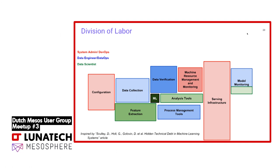If we look at the division of labor, it already looks more favorable. The data scientist — shown in green — still handles feature extraction, analyst tools, and model monitoring, but all of that is really concerned with data or model engineering, which is what the data scientist is good at. All the other parts — data collection, verification, process management, cluster monitoring — can be handed to the data engineer. This gives the data scientist a lot more time to focus on core work.